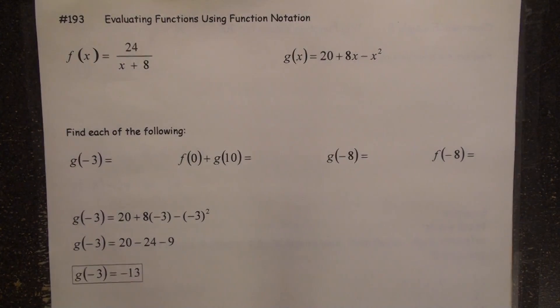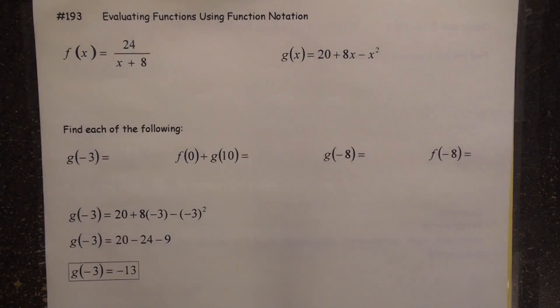Video number 193, Evaluating Functions Using Function Notation. Here we go. We've got f(x) equals 24 over x plus 8 and g(x) equals 20 plus 8x minus x squared. This is actually going to be kind of interesting the way this unfolds.